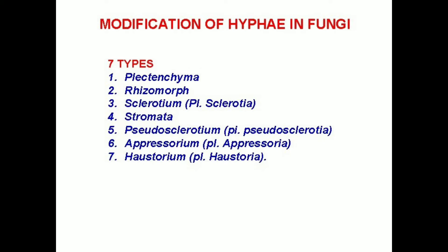So which are the modifications? First one is plectenchyma, then rhizomorph, sclerotium, stromata, and then appressorium and haustorium. These are the seven modifications of fungi we have to mention here.